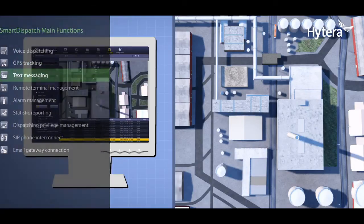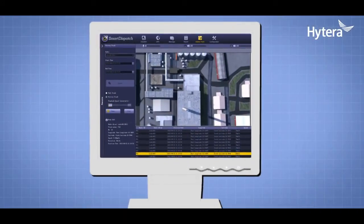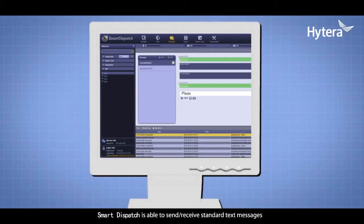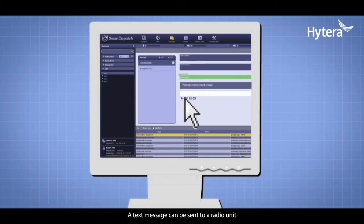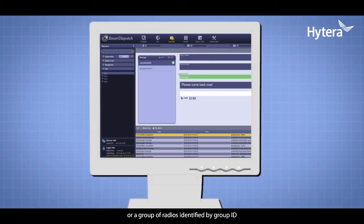Text Messaging: Smart Dispatch is able to send and receive standard text messages. A text message can be sent to a radio unit or a group of radios identified by group ID.